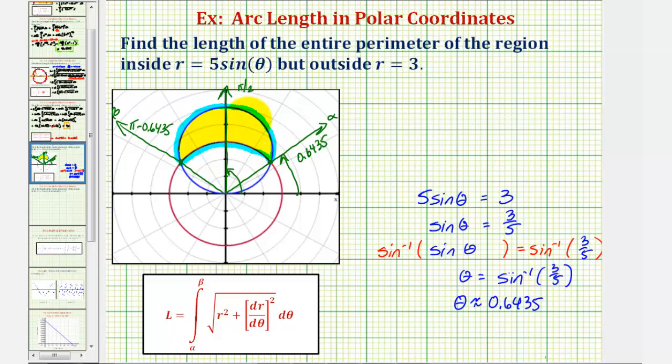Notice how that would give us half of the perimeter. We multiply that by two, we could then find the entire perimeter. Let's go ahead and do that. Let's let pi over two radians be equal to beta, and then we'll just double that length.